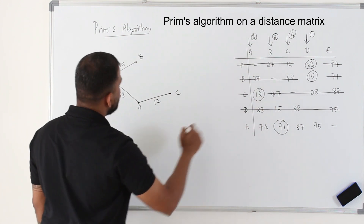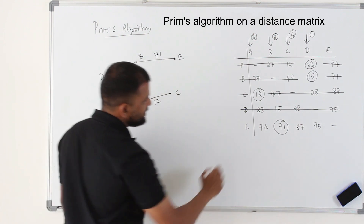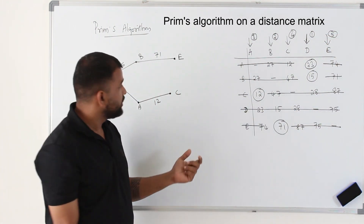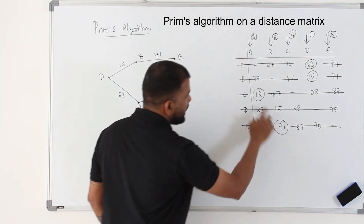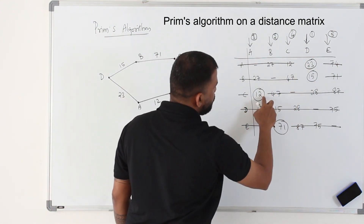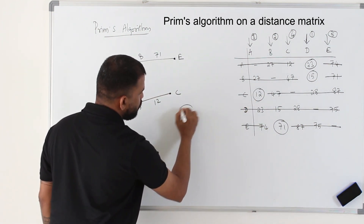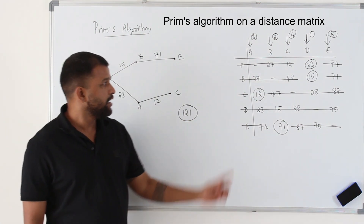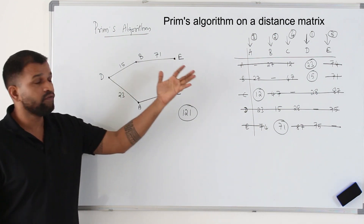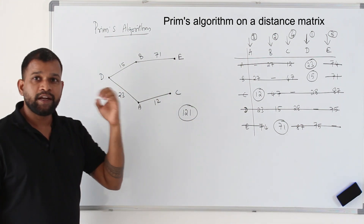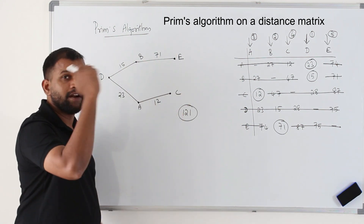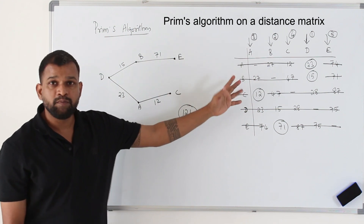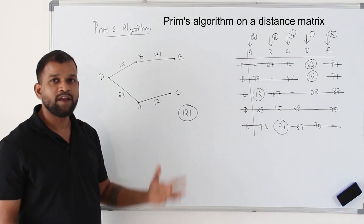Now you have four columns. Look at all four and find the least number. 71 is the smallest, connecting D and E. Label E as number 5. To find the weight of the minimum spanning tree, add all the circled numbers: 15 + 23 + 12 + 71 = 121. That's the weight of this minimum spanning tree. Note: depending on which vertex you start from, you might get a different spanning tree, but the weight of the minimum spanning tree will always be the same regardless of starting vertex.